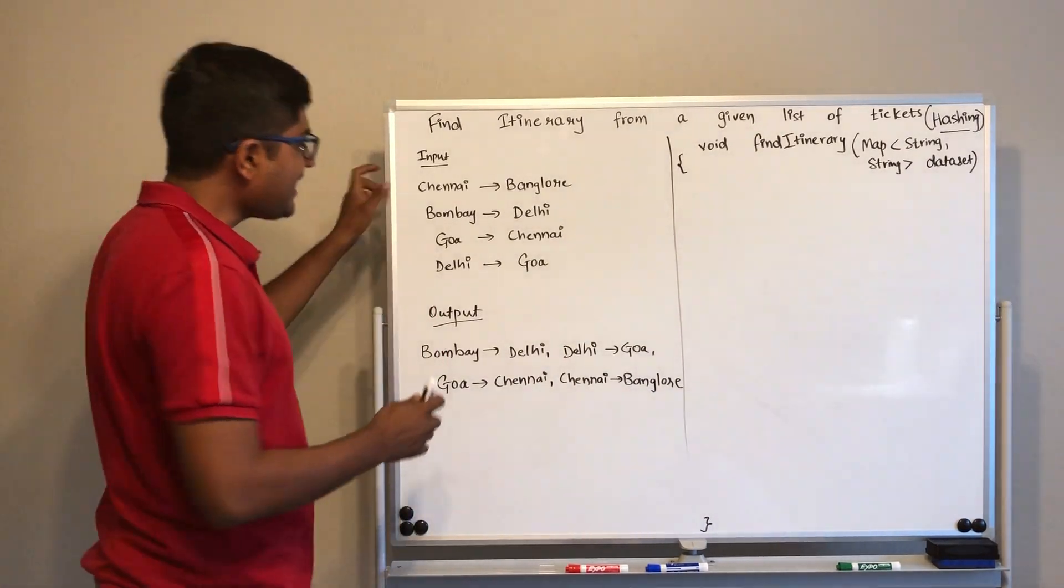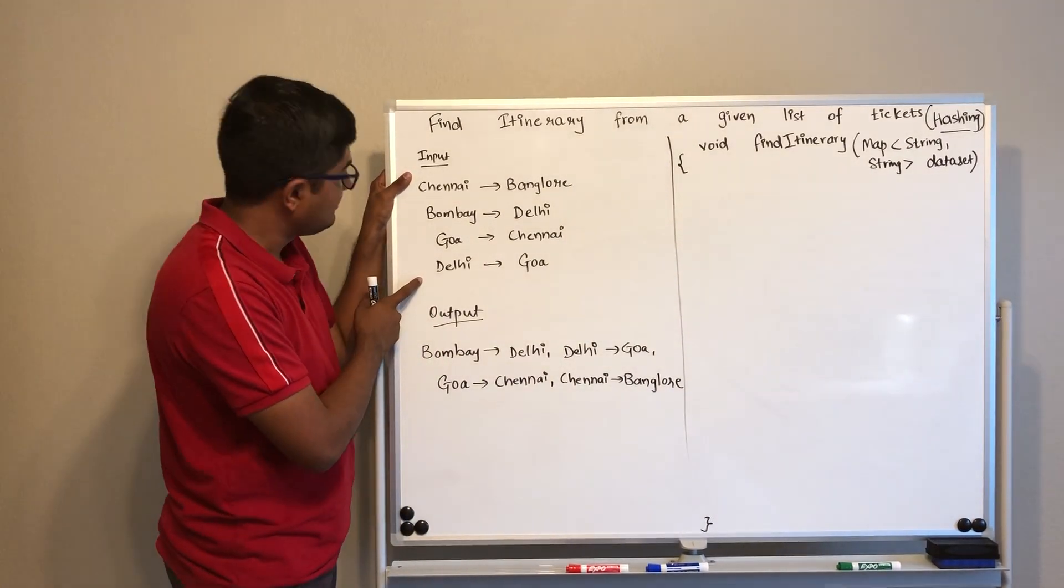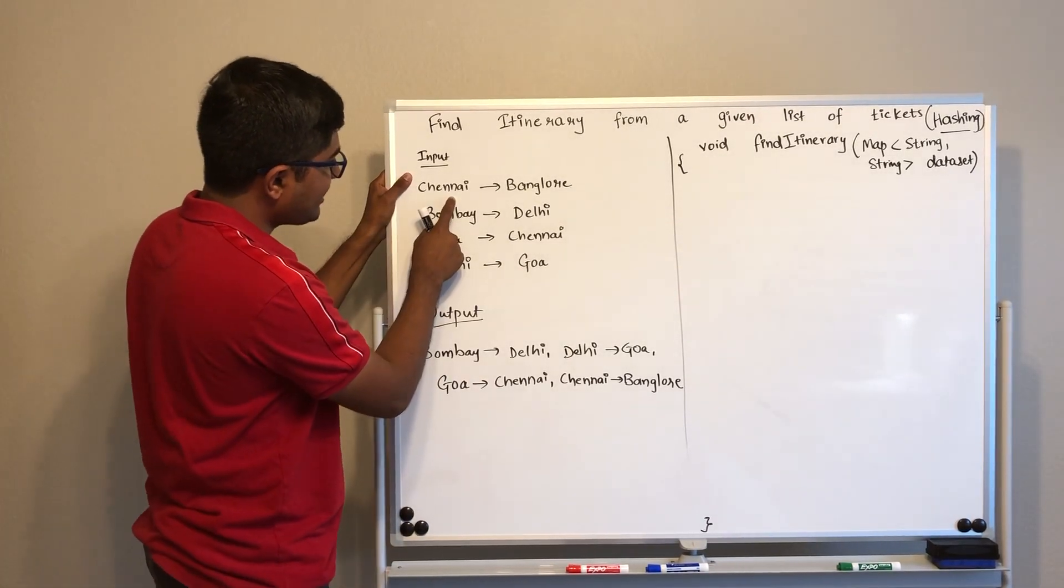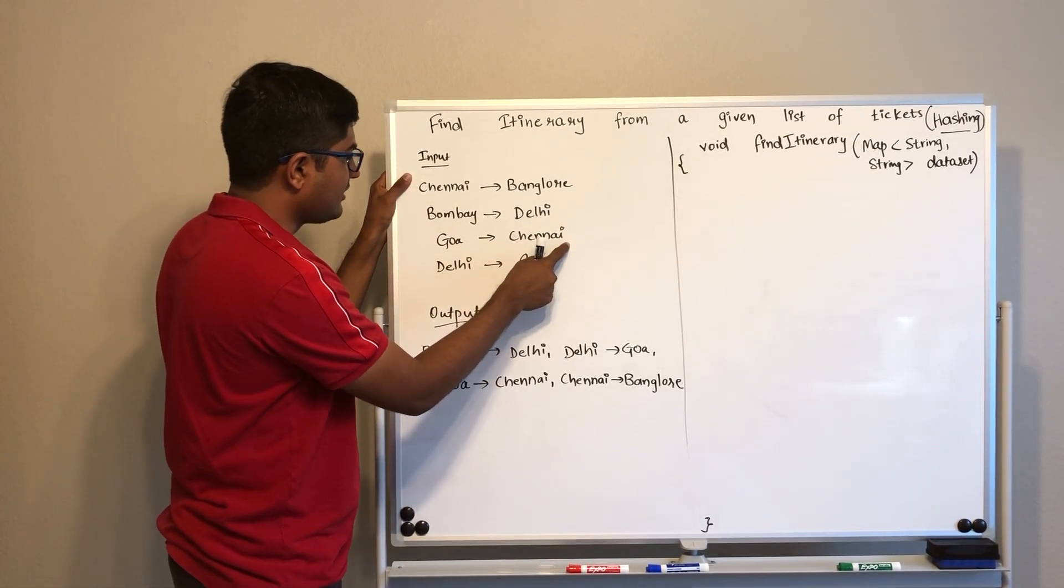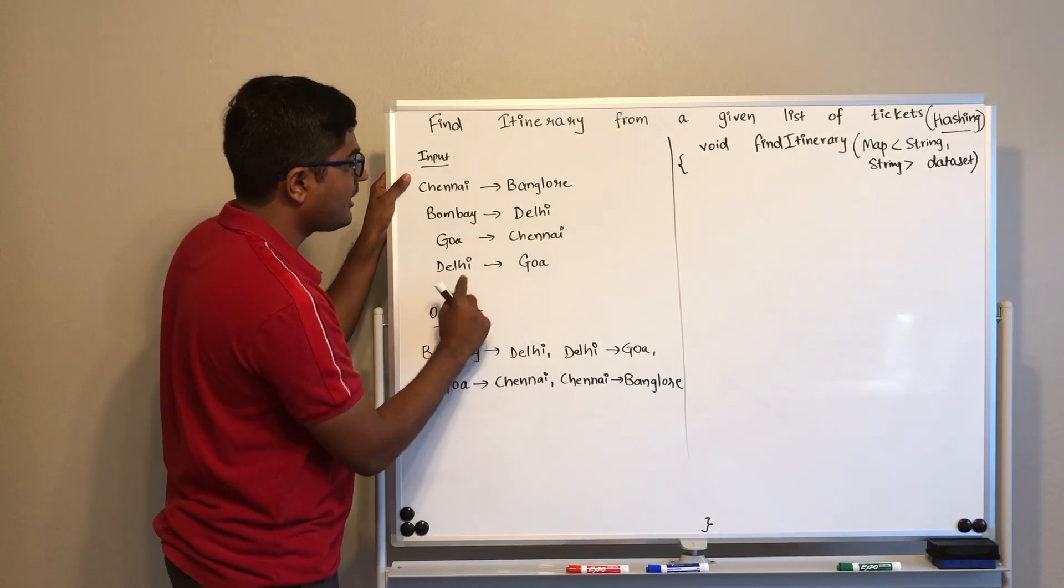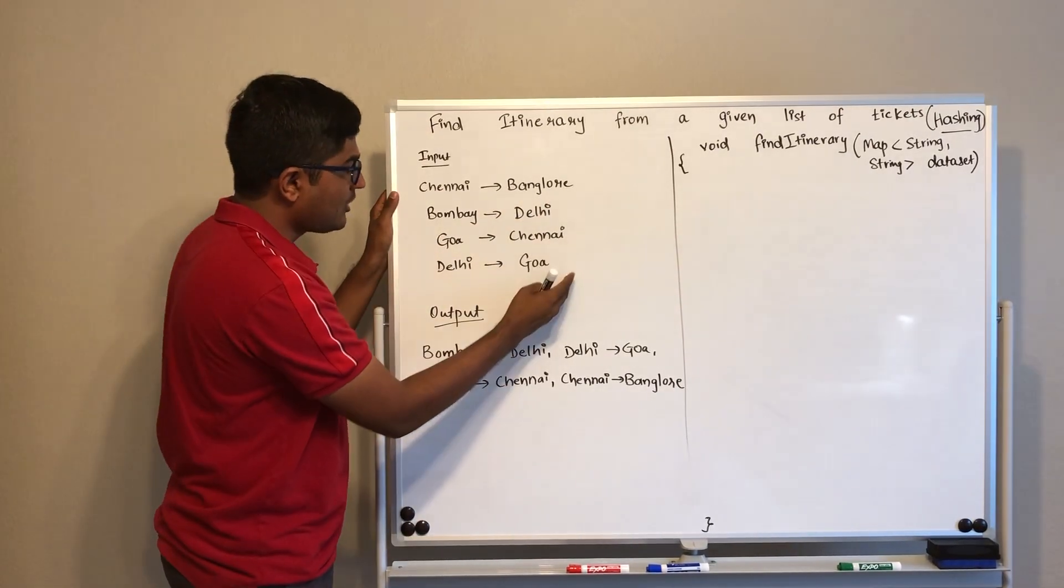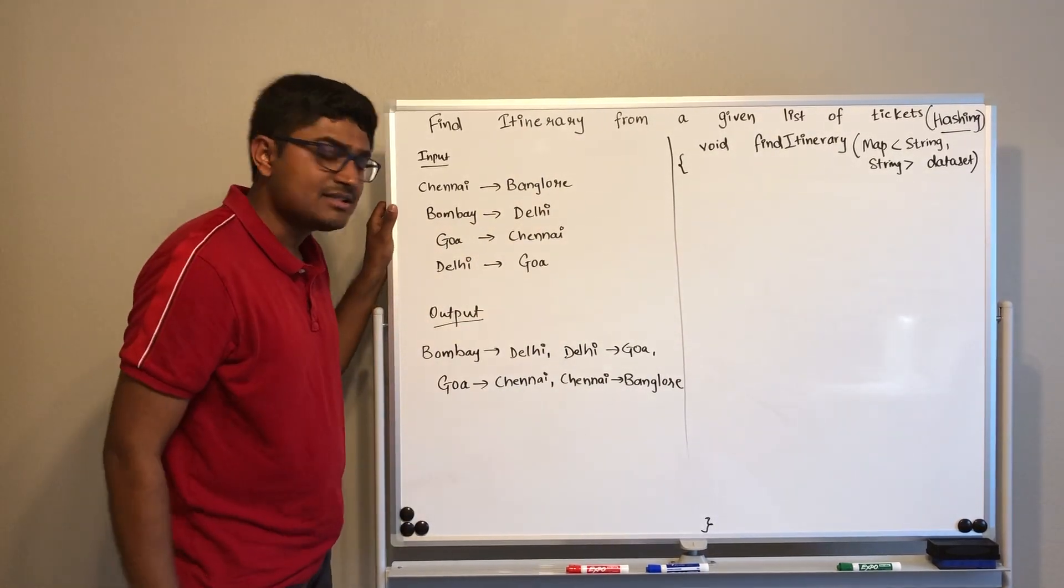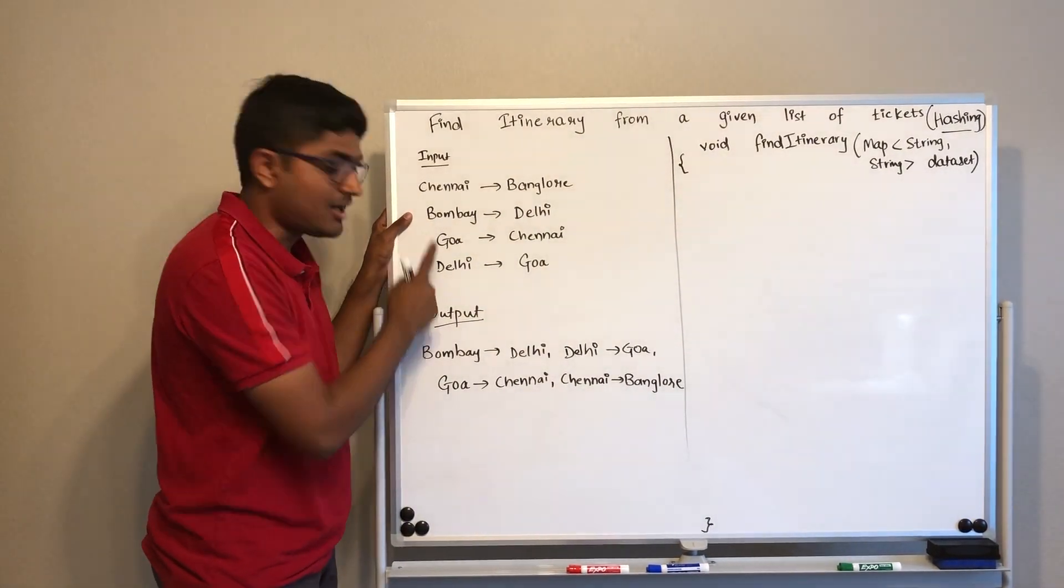So the idea here is to find the starting point. How are we going to do it? If you observe, for every starting point there is an ending point. For Chennai, Goa, and Delhi there are ending points available, but for Bombay there is no ending point. That means it is the starting point of our output path.